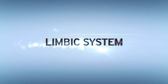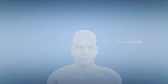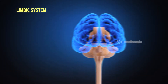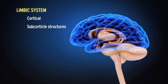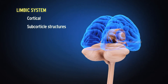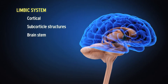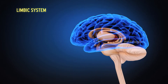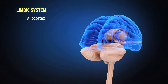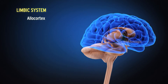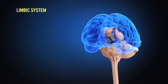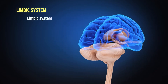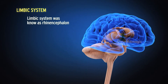The limbic system includes those parts of cortical and subcortical structures which form a ring around the upper end of the brain stem. Phylogenetically, it is the oldest part of the cerebral cortex, which is made up of allocortex — the oldest type of cortex containing three layers of cells.